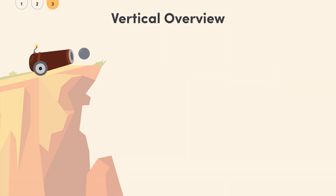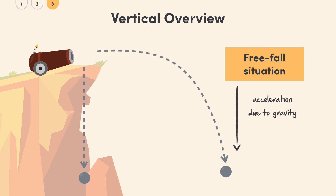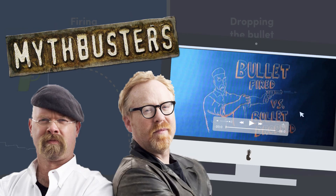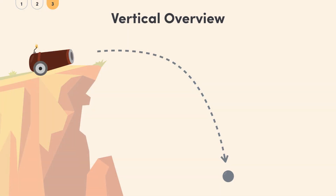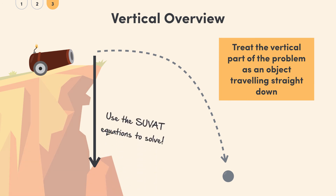In terms of the vertical component, you essentially have a freefall situation. It's a little counterintuitive, but it doesn't matter whether you drop something or throw it out horizontally — there is the same acceleration downwards: 9.81 metres per second squared due to gravity. You might have heard of the famous firing-a-bullet-and-dropping-a-bullet problem: if you fire a bullet horizontally and drop a bullet from the same height, they hit the ground at the same time. You can ignore what's happening horizontally and just treat the vertical part as if you had an object travelling straight down, using the SUVAT equations as you would with freefall examples.